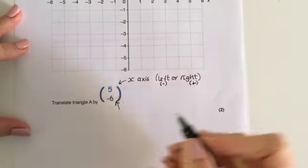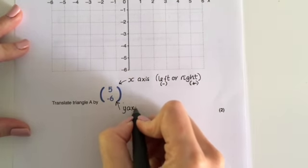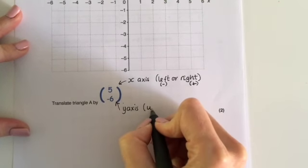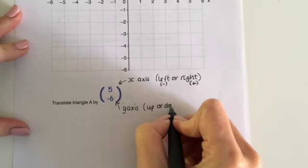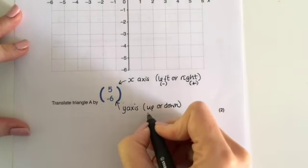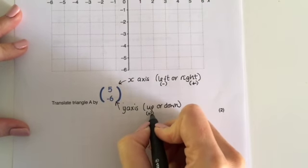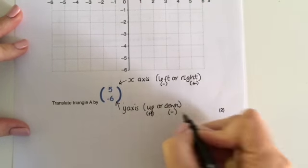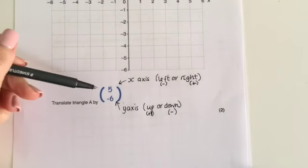The bottom number is the y-axis movement, so it's up or down. Logic would tell us that up would be positive, and down would be negative.